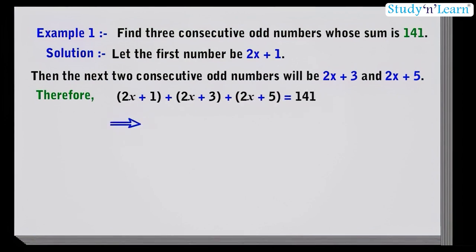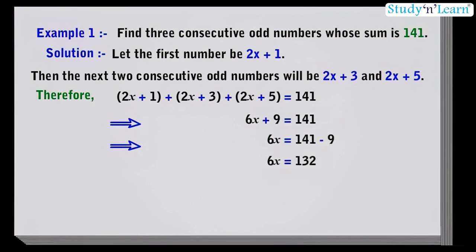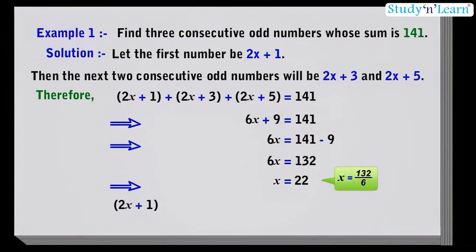This implies adding all the values: 6x plus 9 is equal to 141. This implies 6x is equal to 141 minus 9, which is equal to 132. Now, we will put the value of x equals 22 in 2x plus 1, 2x plus 3, and 2x plus 5 to get the three consecutive odd numbers.